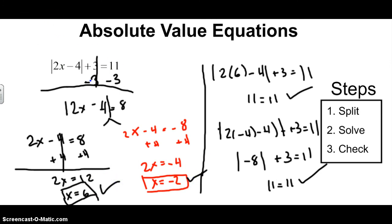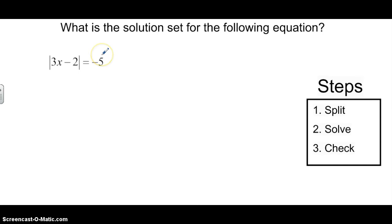Moving along. This one. We want to solve, find a solution to the following equation. Now, if you're looking at this, you're going to start by going, okay, it's isolated, I'm going to start splitting it, so I'm going to do 3x minus 2 equals negative 5, and 3x minus 2 equals positive 5, and then you can do all your solving, get your two answers, but you're wrong. And you know why you're wrong? Because you forgot the most important thing.